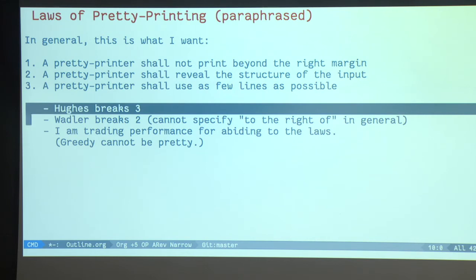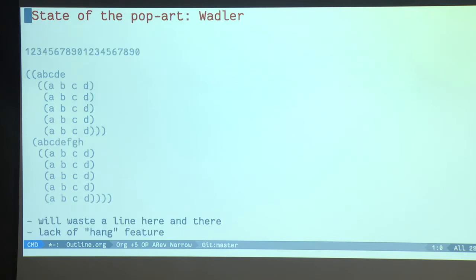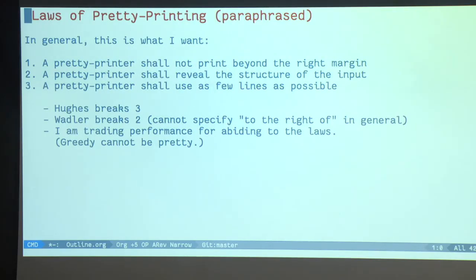We've seen that Hughes library breaks the third law. And Wadler's library breaks the second. Because I don't think that this reveals well the structure of the input. And in the paper, there is maybe a more convincing example. But at least it's actually also wasting lines here and there. And so in the paper, in this contribution, I'm trading performance in exchange for abiding to these laws.